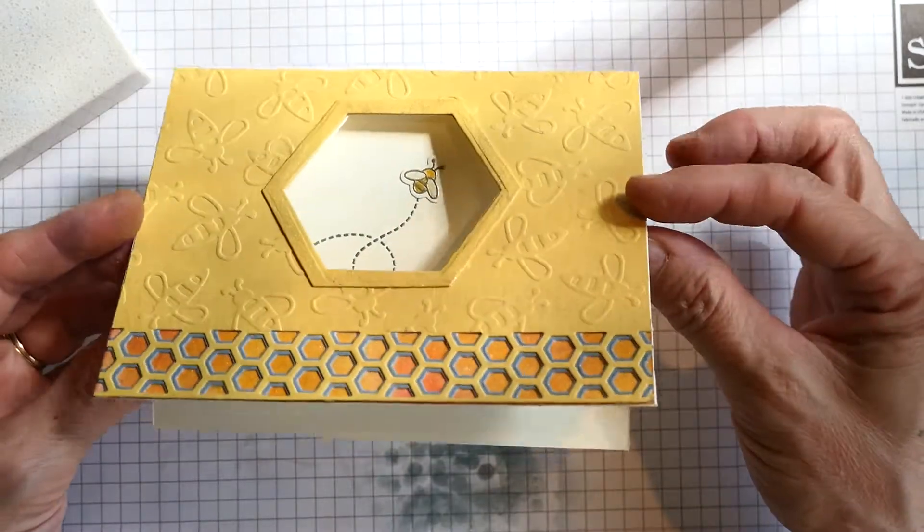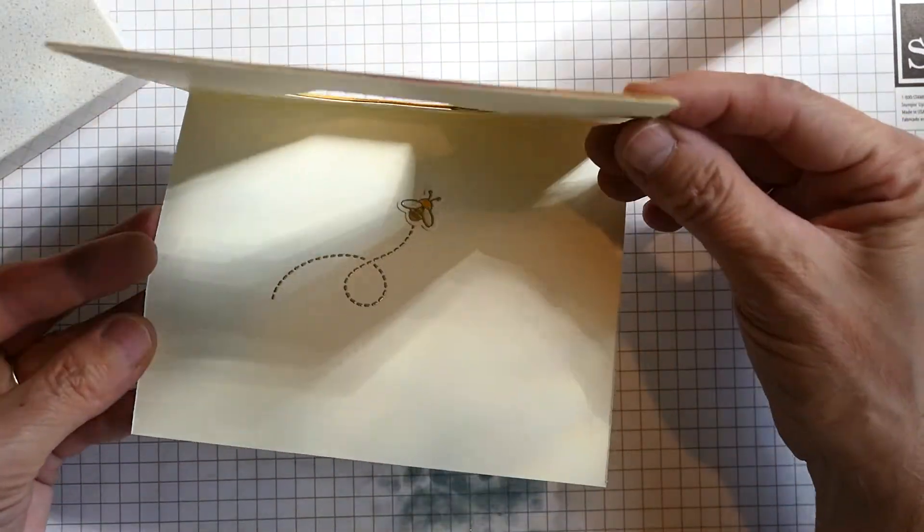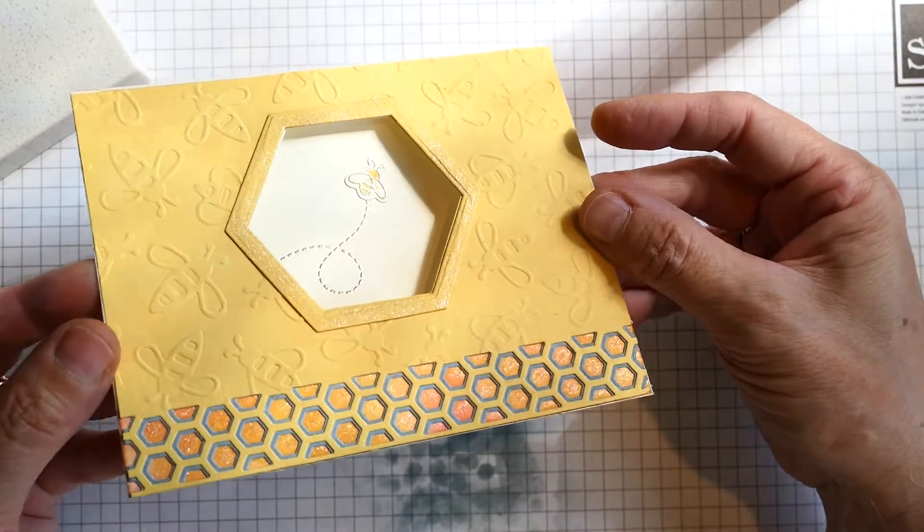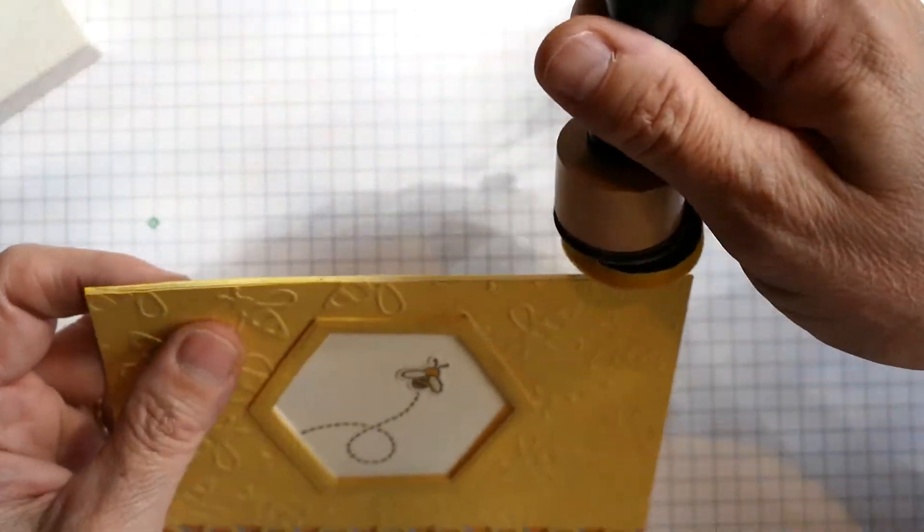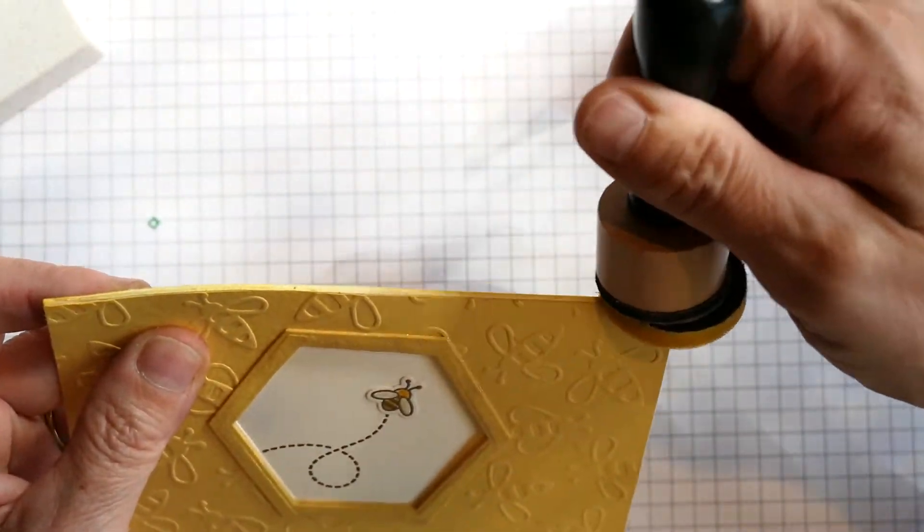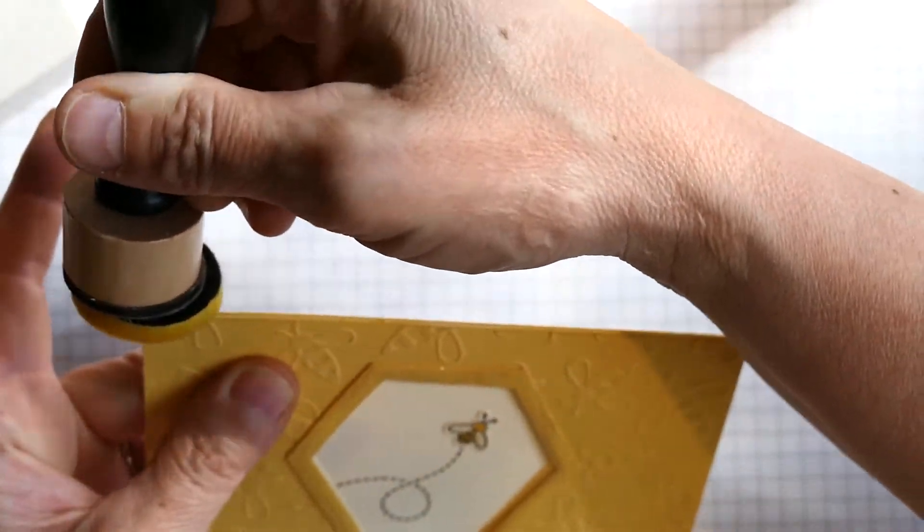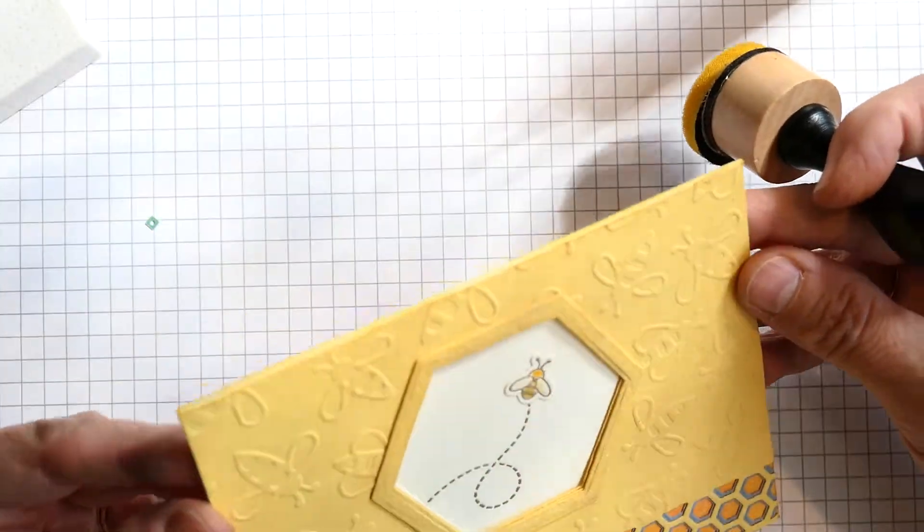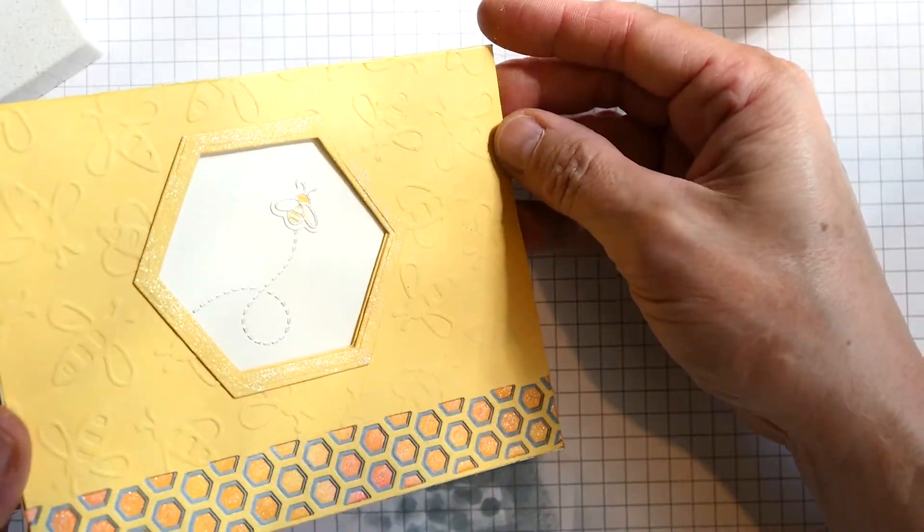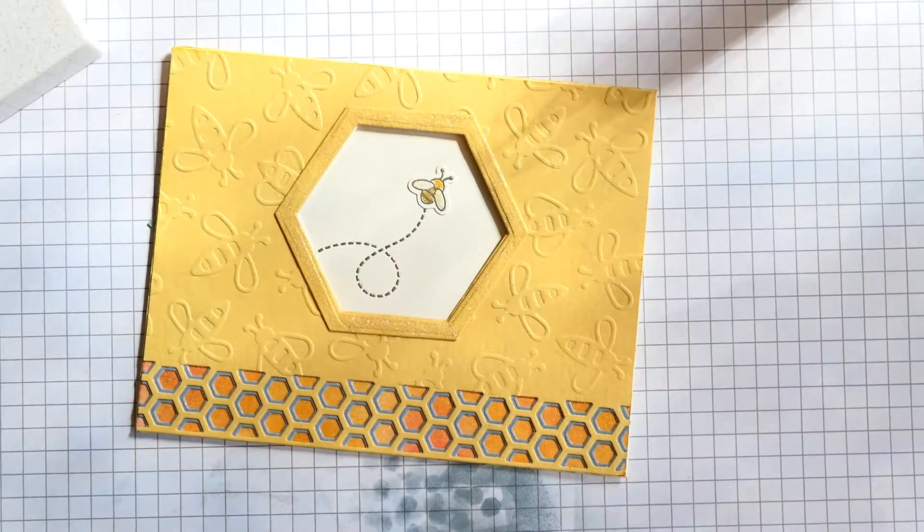I really love how this card turned out. I didn't put a sentiment in there because it could be used for so many different things. If I want a sentiment, I can add one later. Using a little bit of Wild Honey, I ran it along the top to hide that white showing through from the card base.